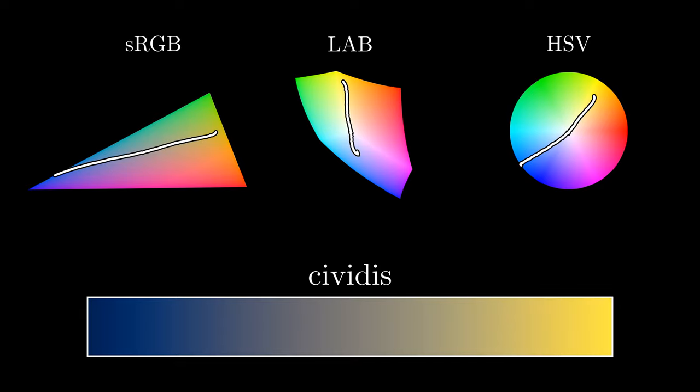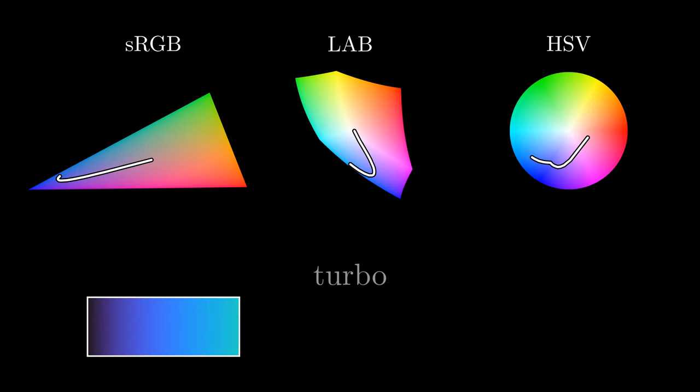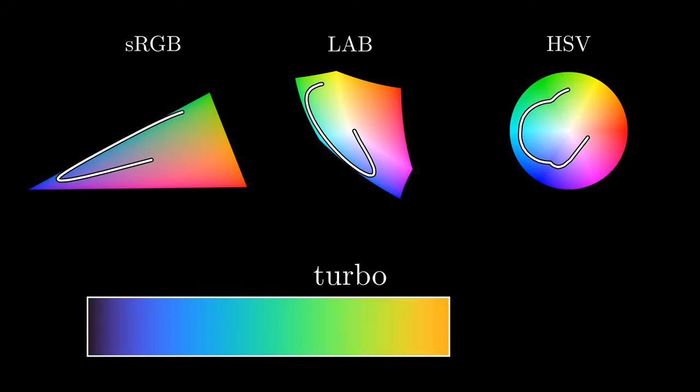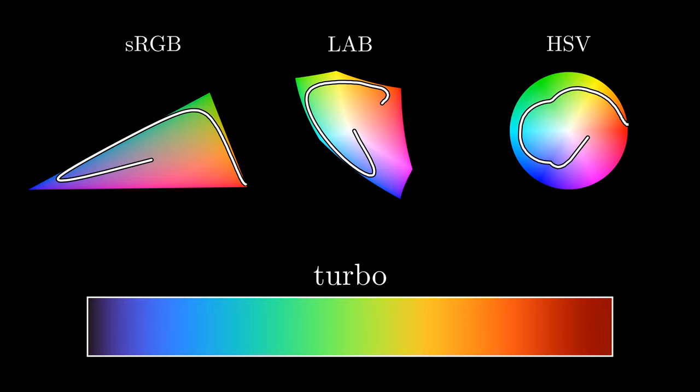Cividis was specifically designed for accuracy even when the viewer is color blind. And of the new color maps, Turbo is the only one that does not build on perceptual smoothness, optimizing instead for high contrast.